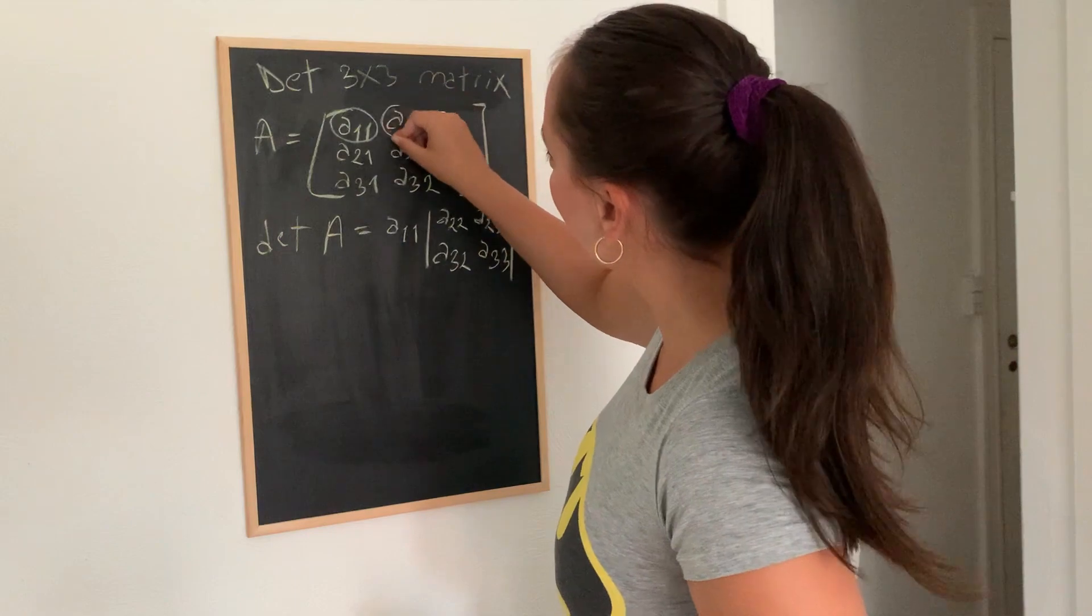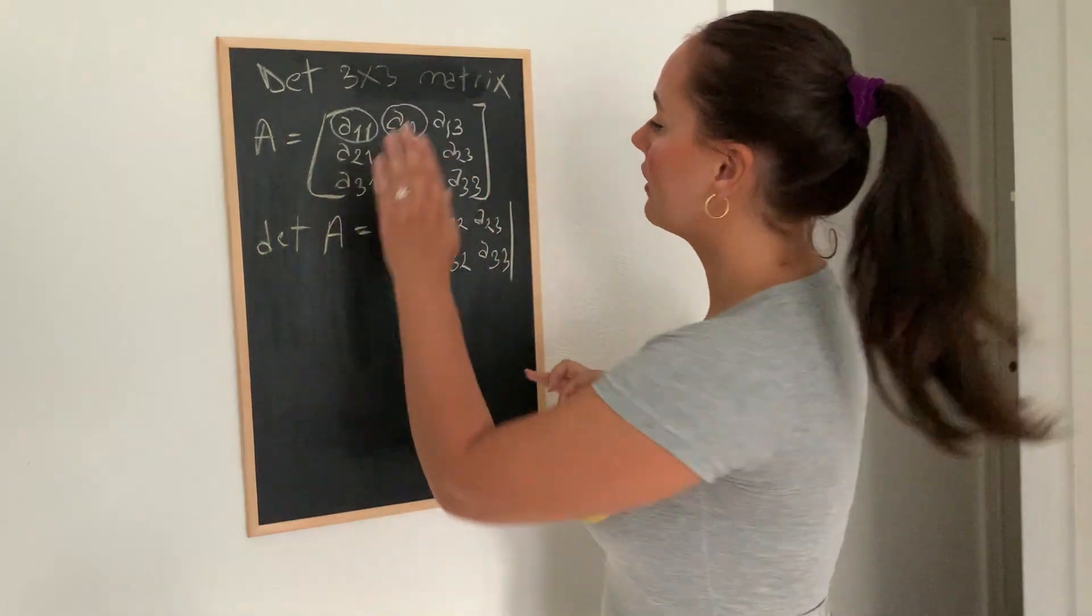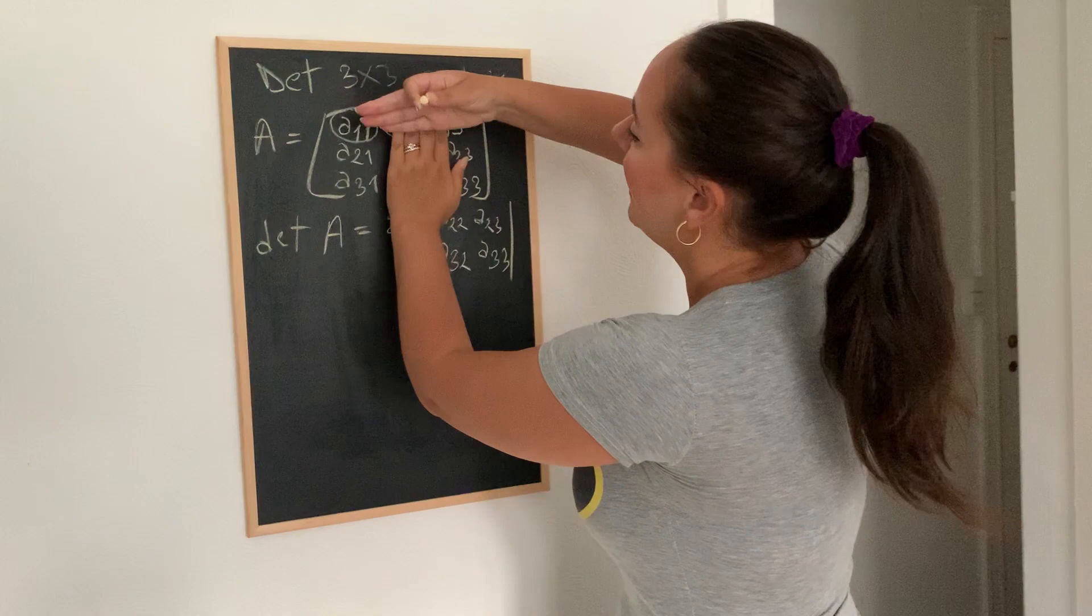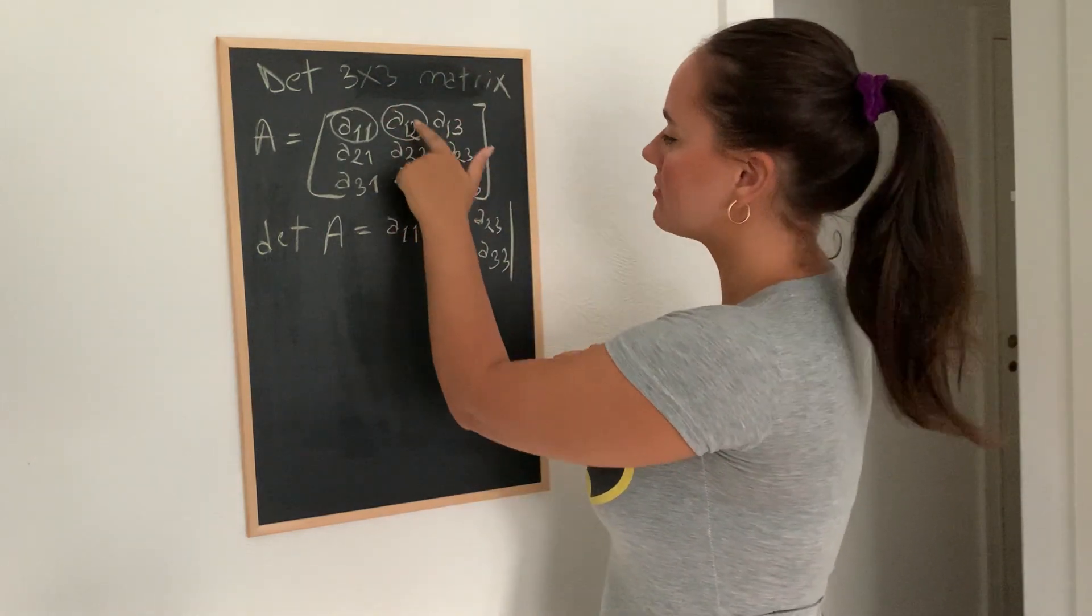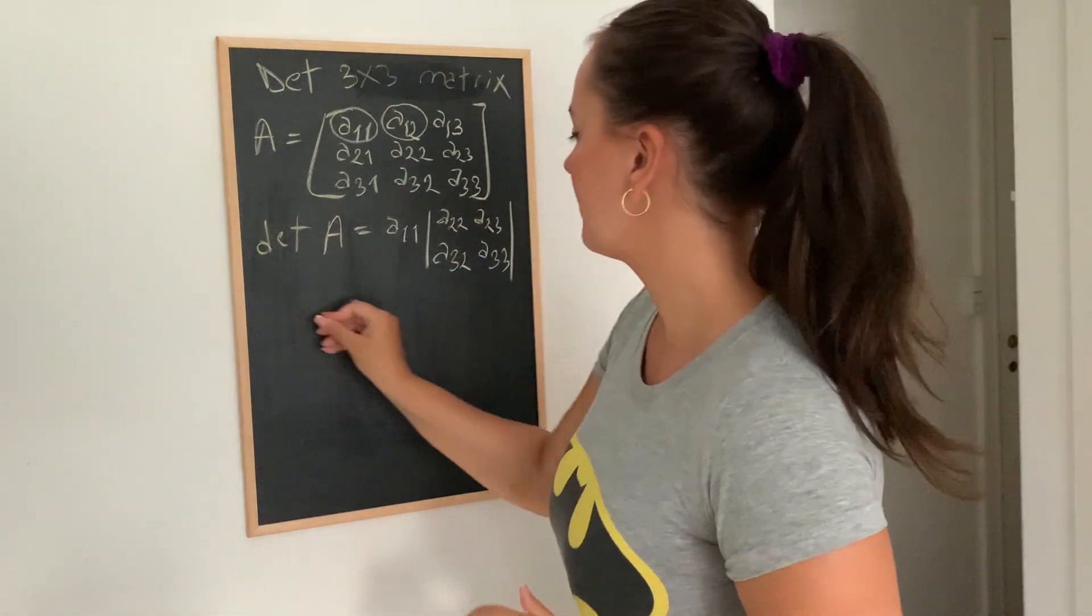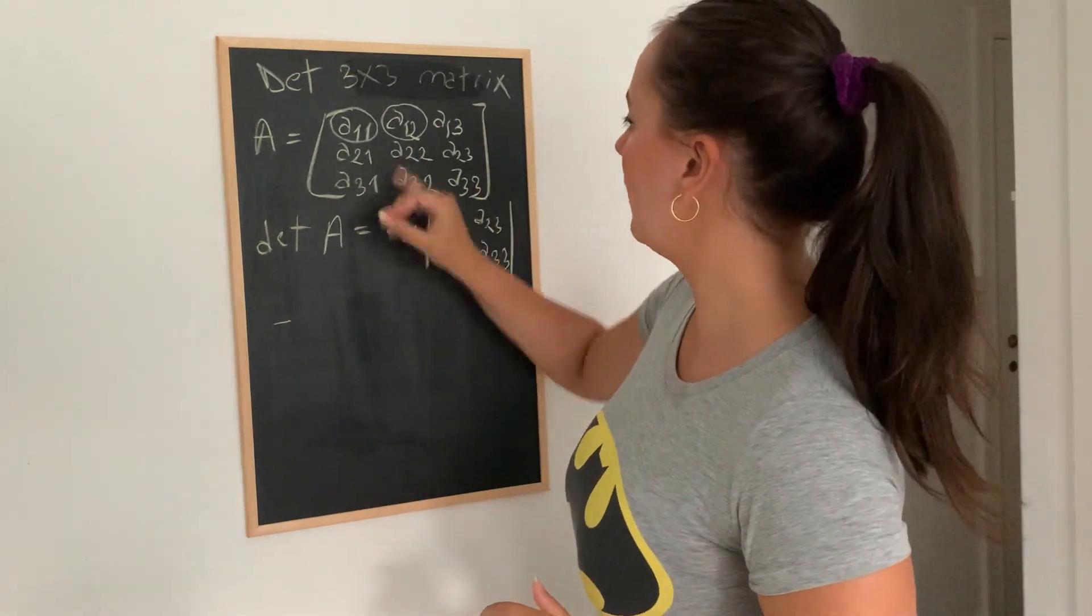Now we move on to the second element. And we do the same. We cover this column and this row and we multiply the element we just made a circle around with the remaining matrix. And we do minus A1,2.